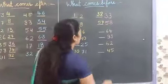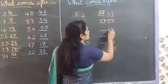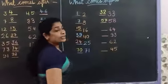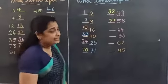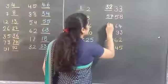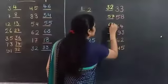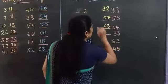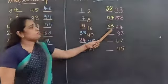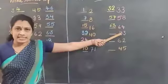And next number is 64. 64 ke pehle kya tha? 6, 3 — that is 63. 63 comes before 64.